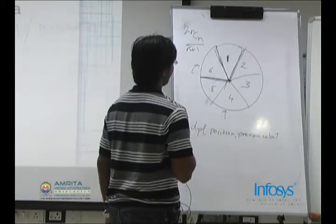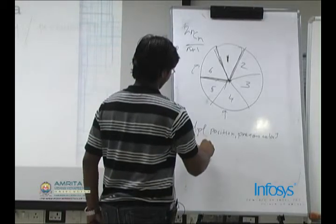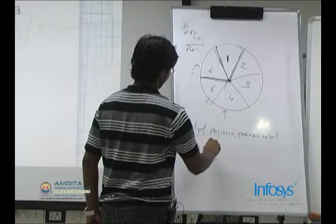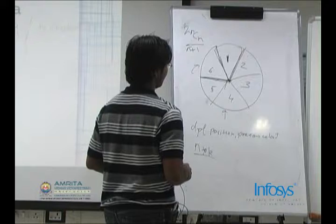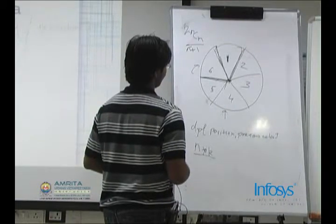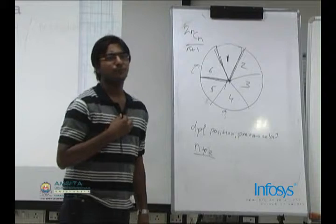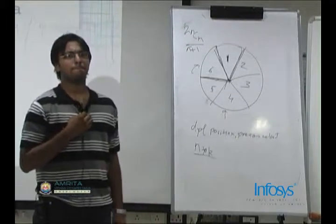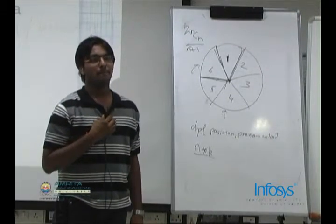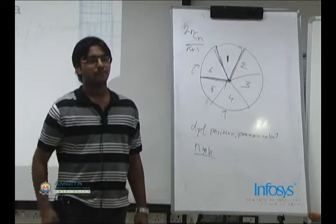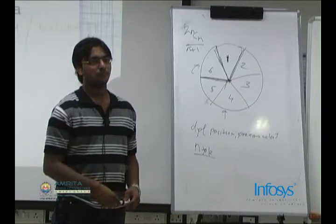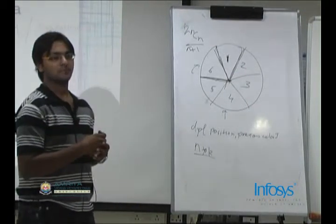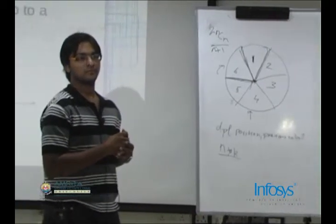O(n * k). You're going to the next color - that's n steps - and you're placing k colors, k-1 colors for everything.